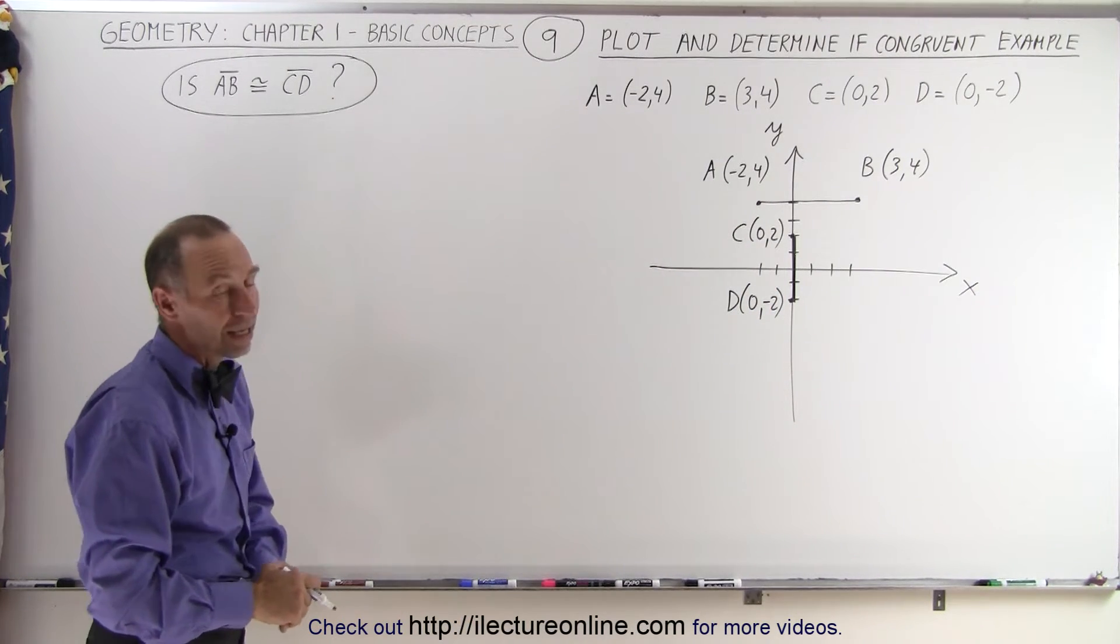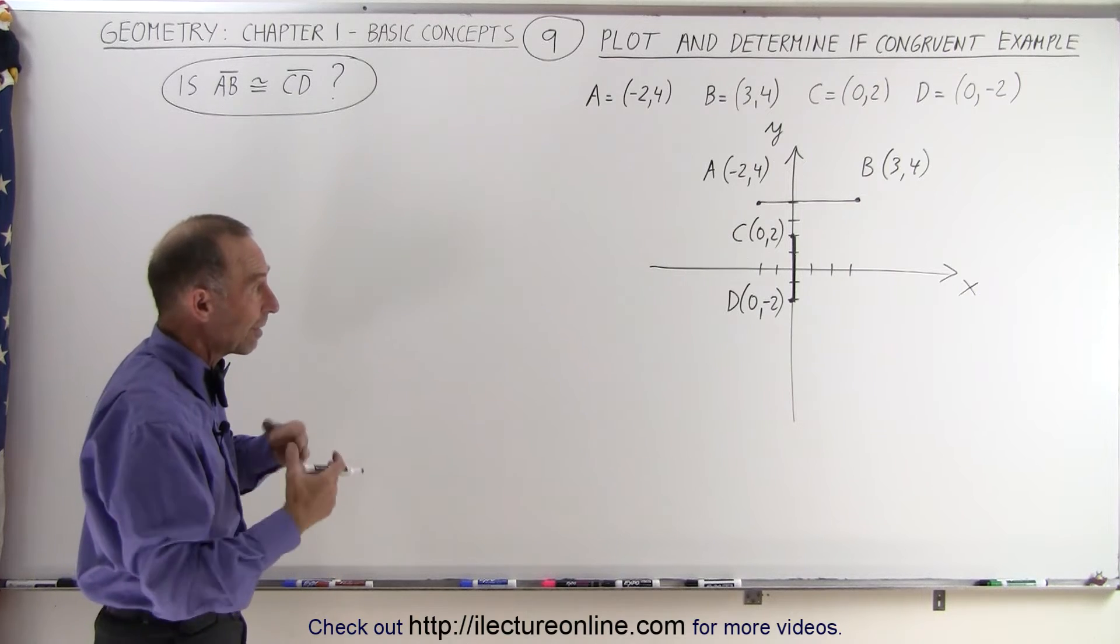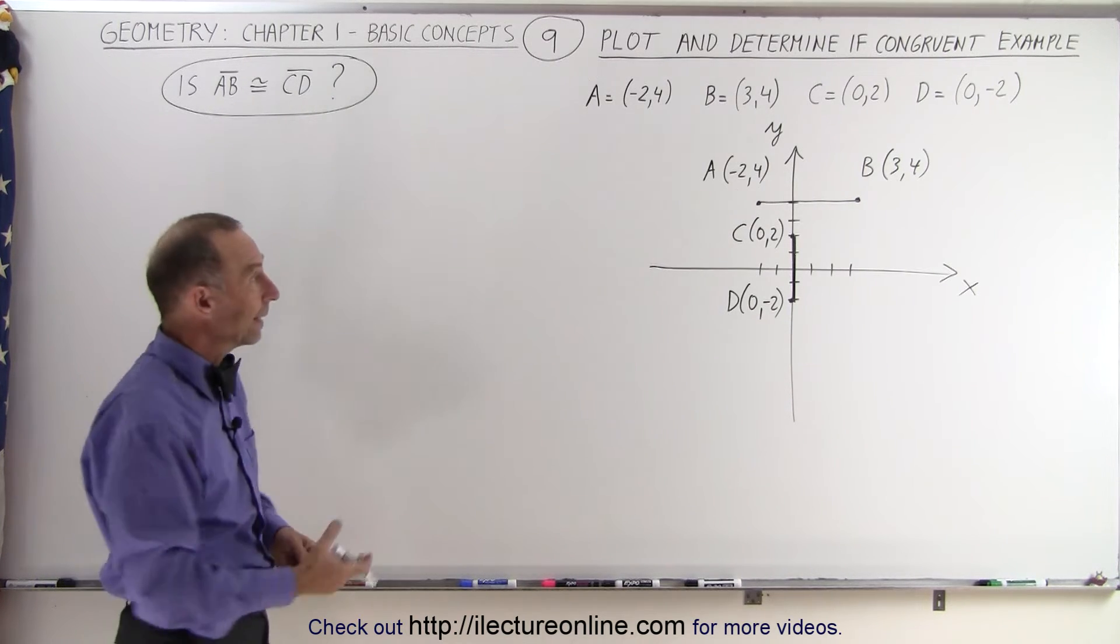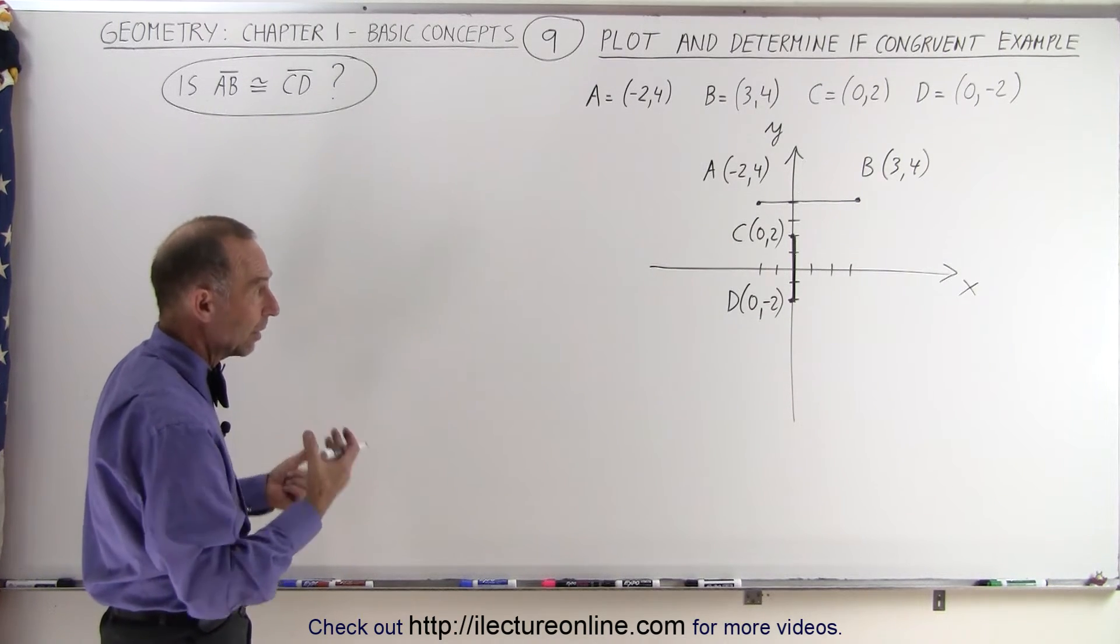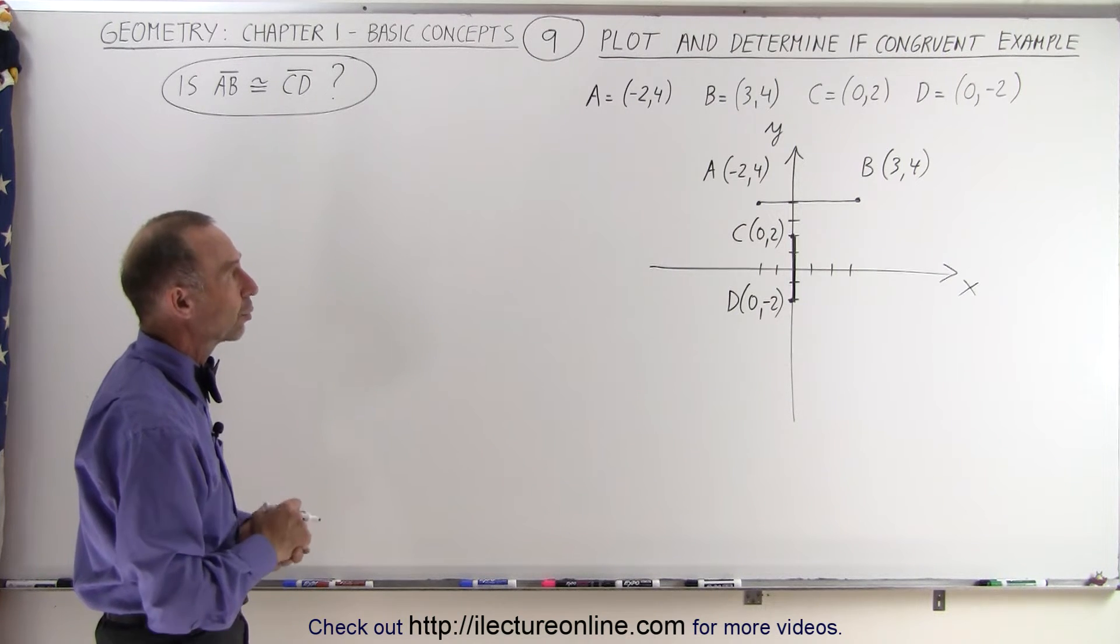Now we need to determine if they have the same length. If they do, then they are congruent. If they are not the same length, then they are not congruent.